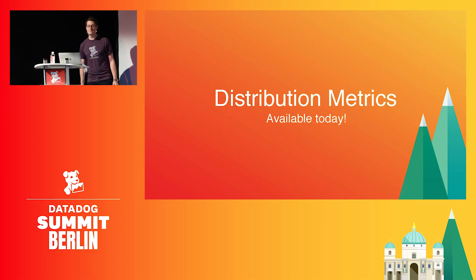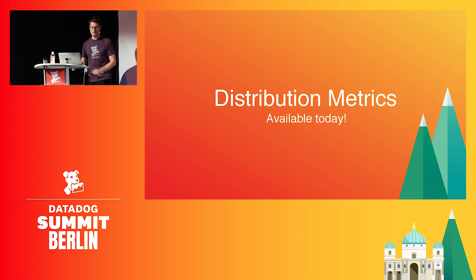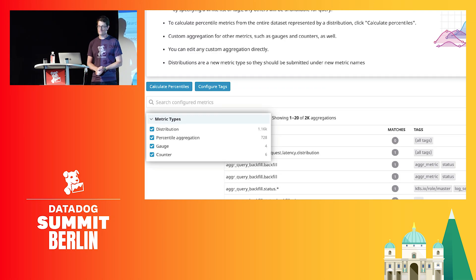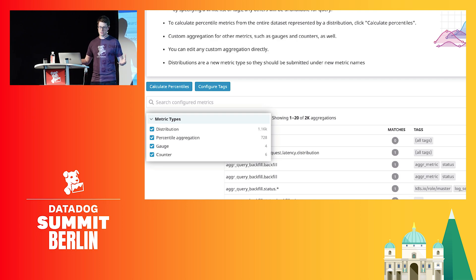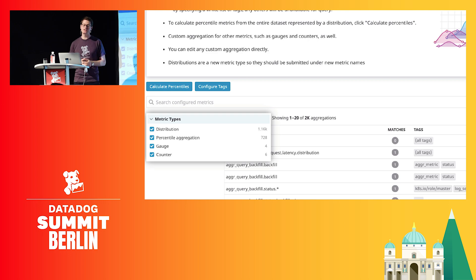Distribution metrics provide measurements for high-resolution data sets and provide precision and control in describing that data. You can opt into distribution metrics today, which also brings me to my next part. I'm also excited to announce that we are starting to provide a technical preview for metrics without limits for gauges and counts as well. This fills out the metrics without limits suite and encompasses all of the metrics in Datadog. This is an extension of the work we did developing distributions, meaning you have control over aggregation for any metric type in the app.